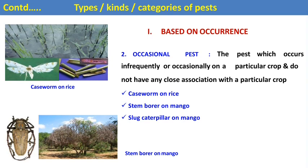The second pest based on occurrence is the occasional pest — pests which occur infrequently on a particular crop and do not have any close association with that crop. They do not occur regularly but appear sometimes or in some areas. Examples are caseworm on rice, stem borer on mango, and slug caterpillar on mango.